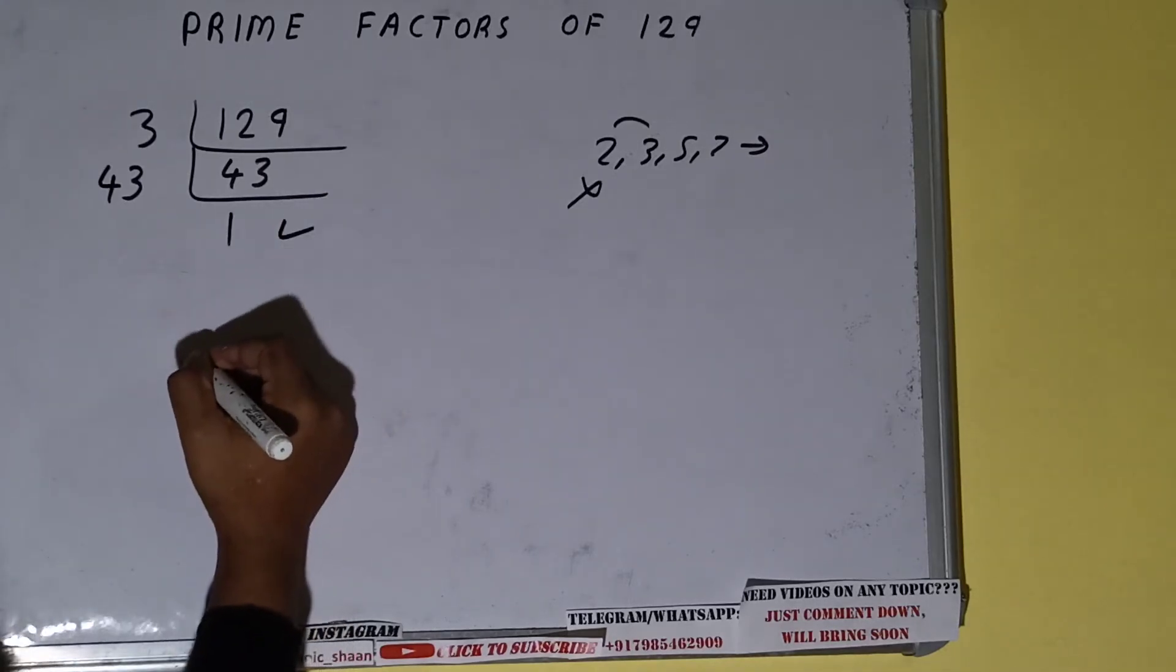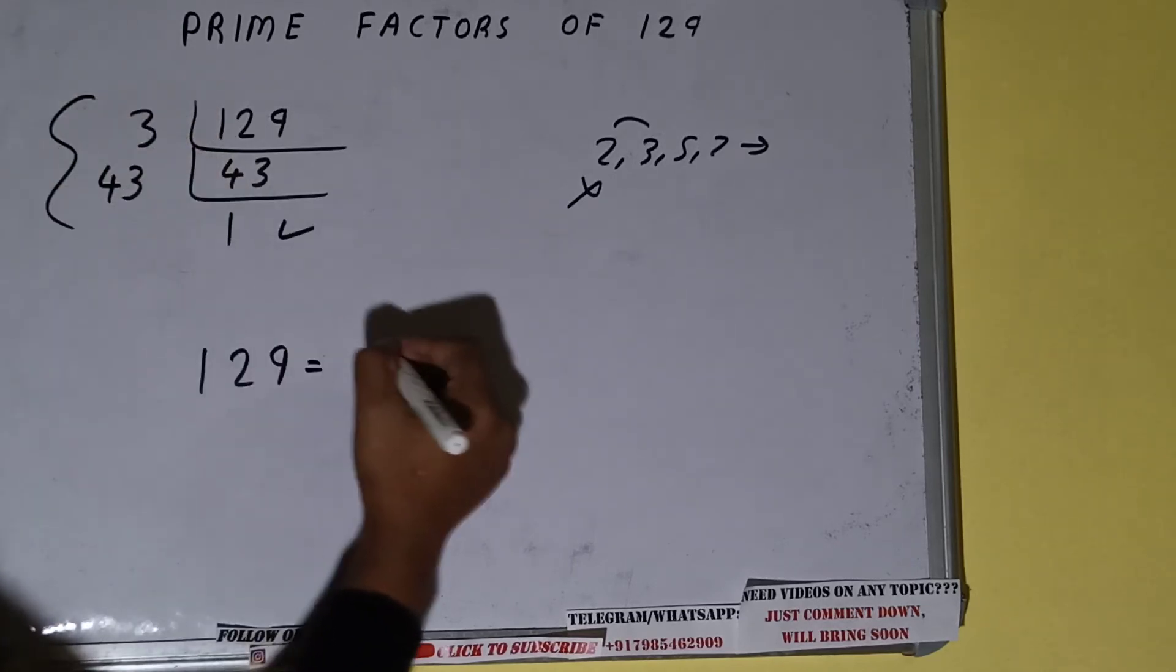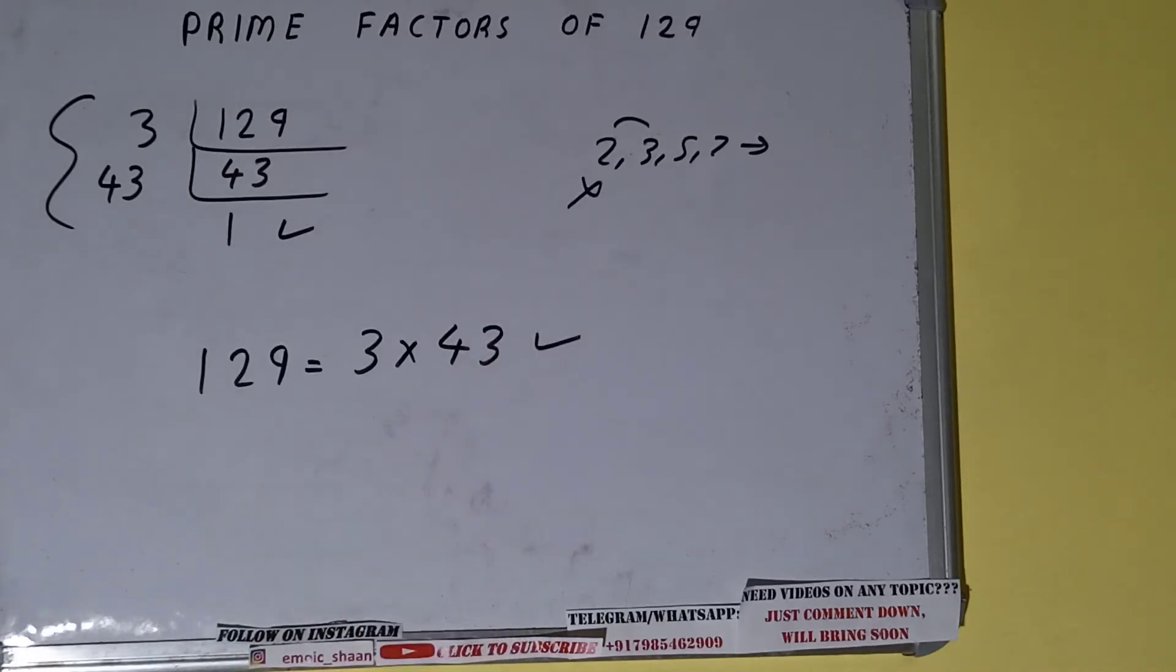Once we get 1, we need to stop and do one last thing. That is, prime factors of 129 will be whatever we have on the left inside, that is 3 times 43. That would be the answer.